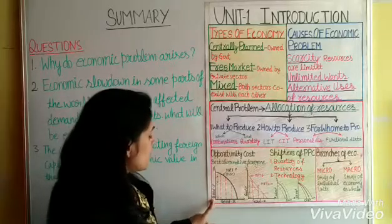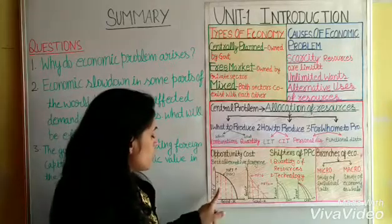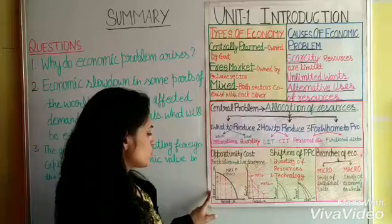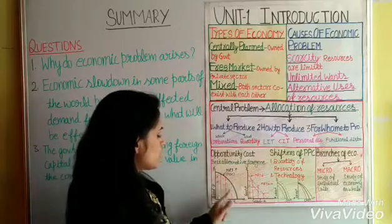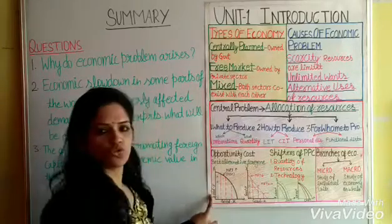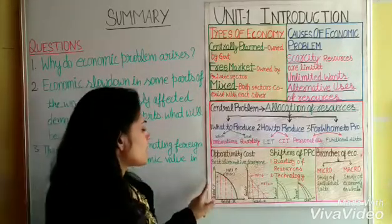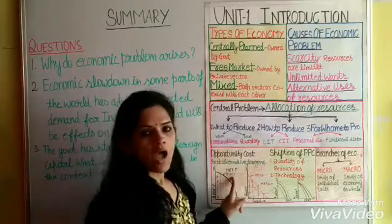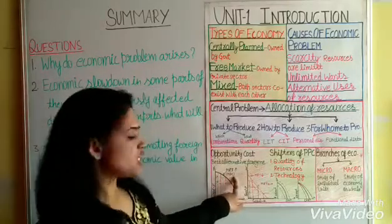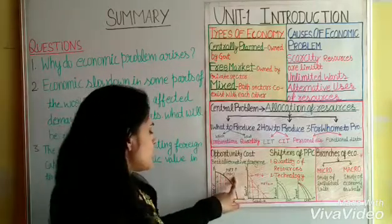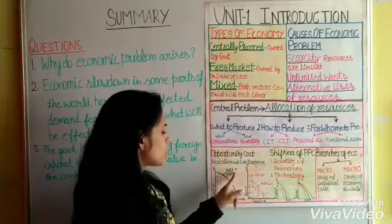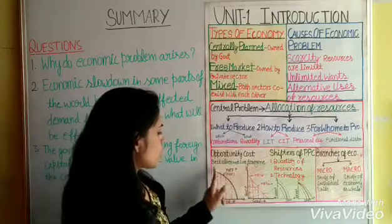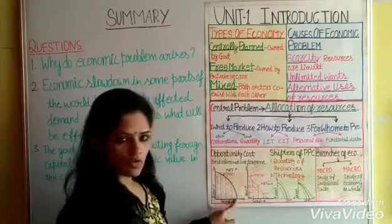The PPC shows two goods X and Y that can be produced. The shape of the PPC is determined by MRT — the Marginal Rate of Transformation. If MRT is increasing, then the PPC is a concave-shaped curve.